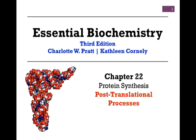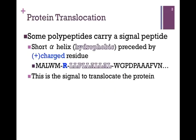In our final lesson on Chapter 22, Protein Synthesis, we want to consider post-translational processes. Let's first look at a specific example: protein translocation. This occurs when a protein needs to be inserted within the cellular membrane or perhaps exported to the extracellular portion of the cell.